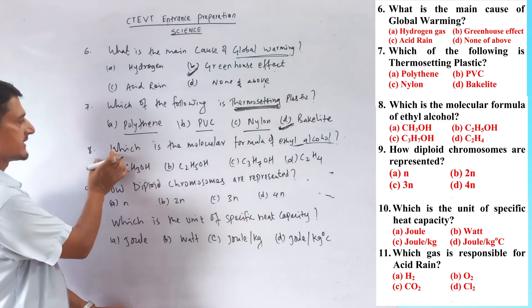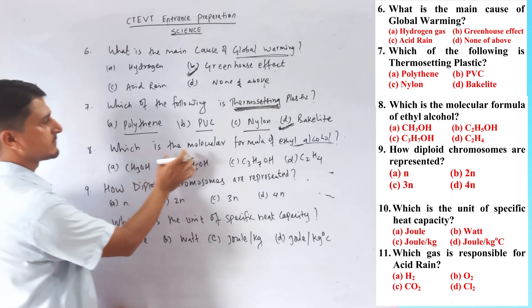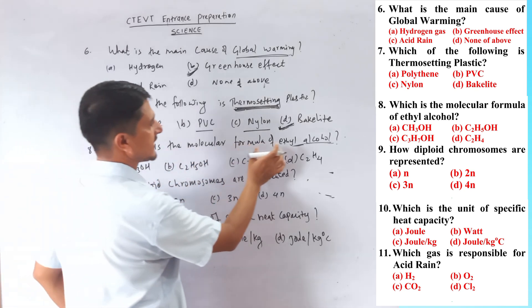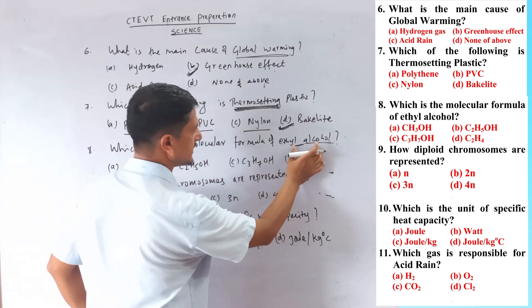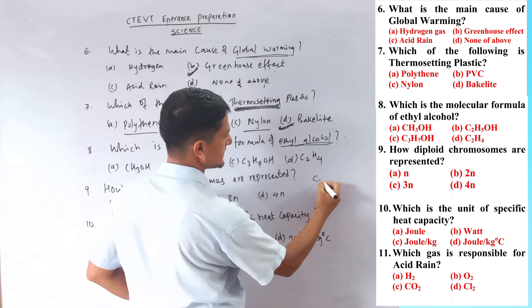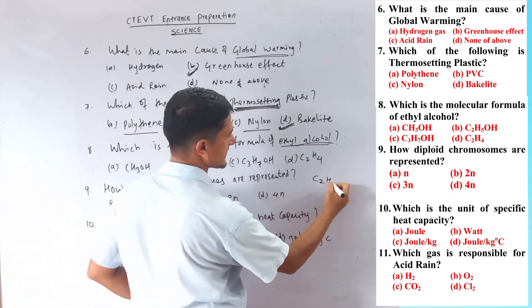Question number eight: which is the molecular formula of ethyl alcohol? Ethane is C2H6.